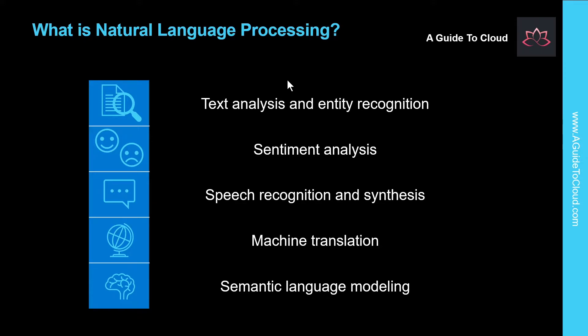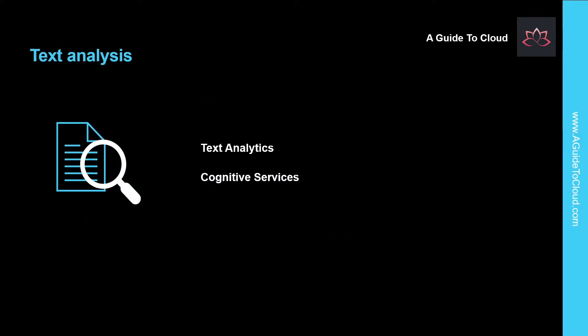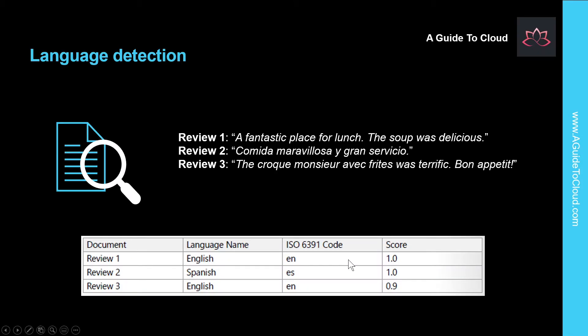Natural language processing includes several services, so let me take you through these one by one. Let's start with text analysis. The text analysis service is part of the Azure Cognitive Services offering that can perform advanced natural language processing over raw text. To use it in an application, you must provision an appropriate resource in your Azure subscription — either a text analysis resource or a cognitive services resource. The next capability is language detection. You can use the language detection capability of the text analysis service to identify the language in which the text is written.